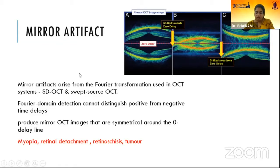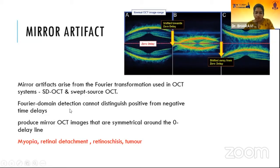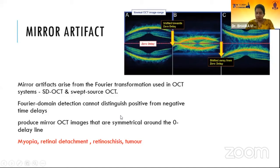Mirror artifacts are especially seen in Fourier domain OCTs. They occur due to the Fourier domain's inability to identify positive and negative time delays, resulting in mirror OCT images that are symmetrical around the zero time delay point. It is commonly seen in myopia, retinal detachment, retinoschisis, and tumors.